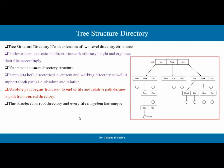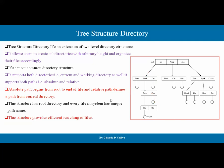This structure has a root directory and every file in the system has a unique path name. So every file has a unique path name. For example, if I want to access abc.text, that is a different path than if I want to access F1, which would have a different path. So every file has a unique path name to their particular files and folders. This structure provides efficient searching of files because we have a path name, so searching becomes very easy.